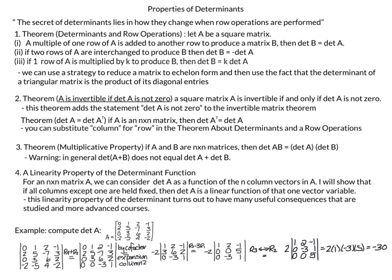The first theorem talks about how row operations impact determinants. If A is a square matrix and a multiple of one row is added to another row to produce matrix B, then the determinant of B equals the determinant of A. If two rows are interchanged, the determinant of B equals the negative determinant of A. If one row is multiplied by k to produce B, then determinant of B equals k times determinant of A. We can use row operations to reduce a matrix to echelon form, then use the fact that the determinant of a triangular matrix is the product of its diagonal entries.